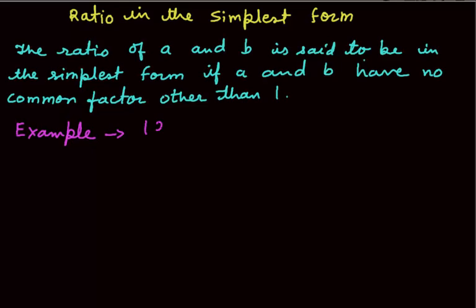Example: 12 is to 16. We can write 12 is to 16 as 12 over 16. Now, 12 and 16 have a common factor 4.